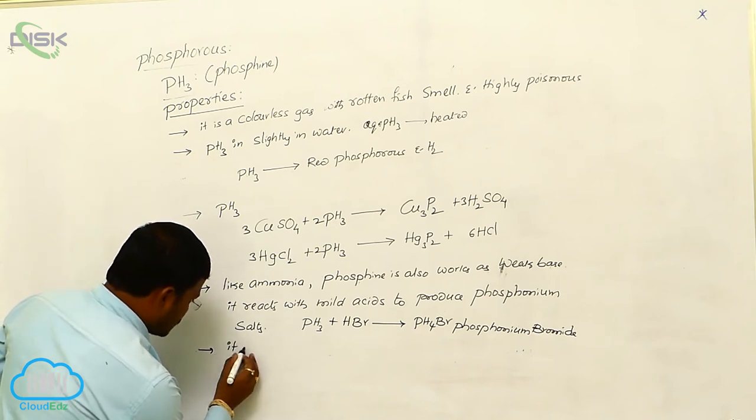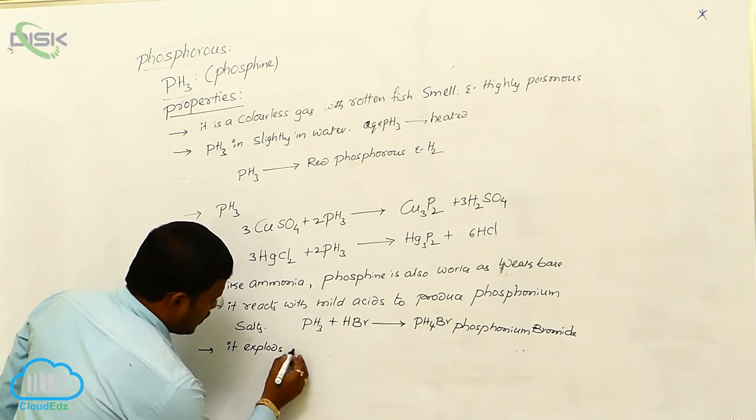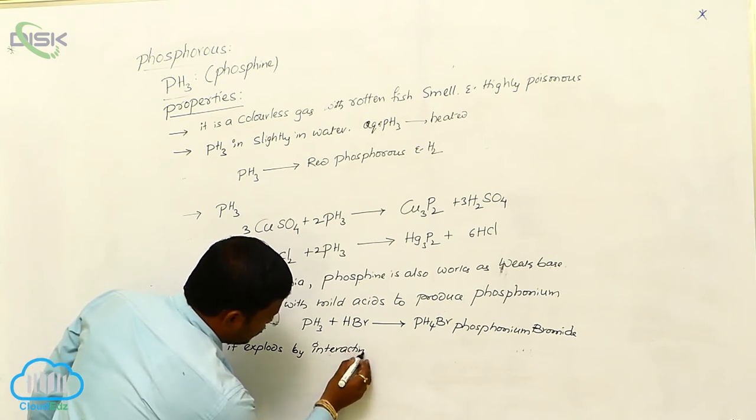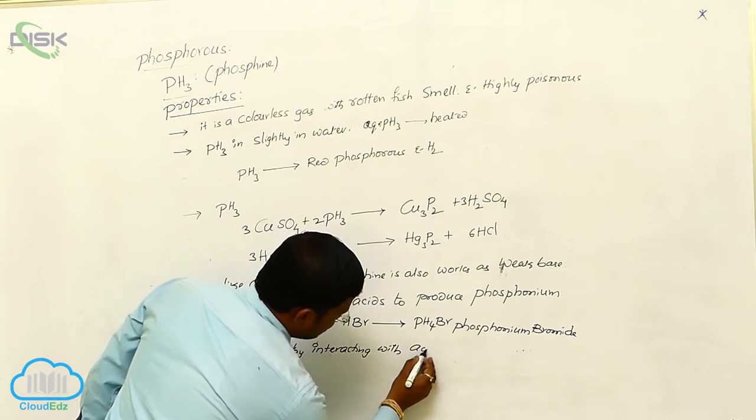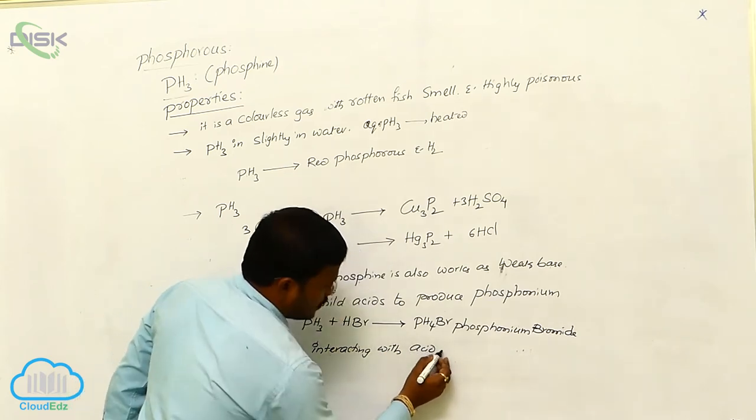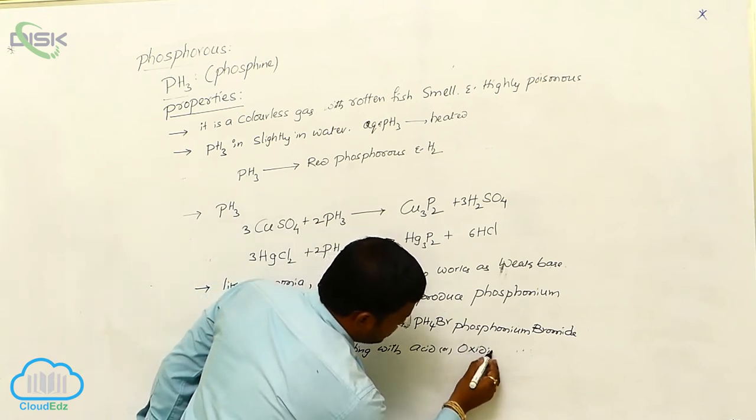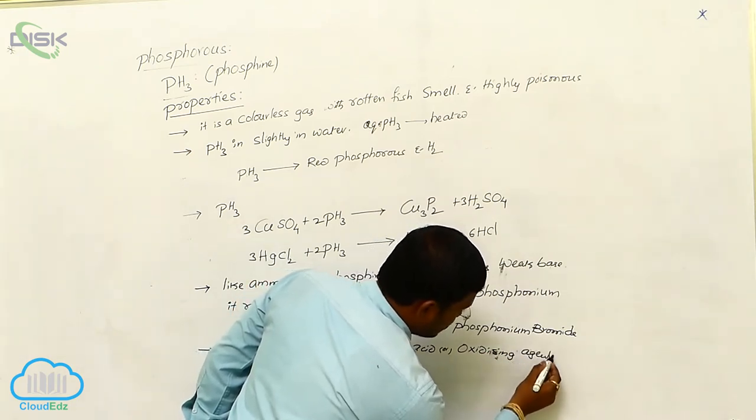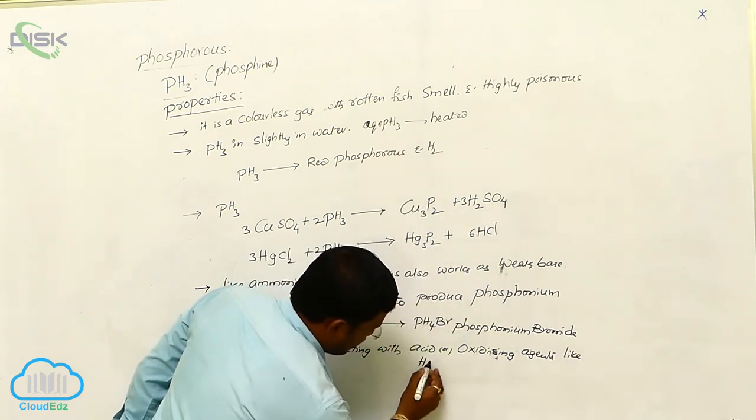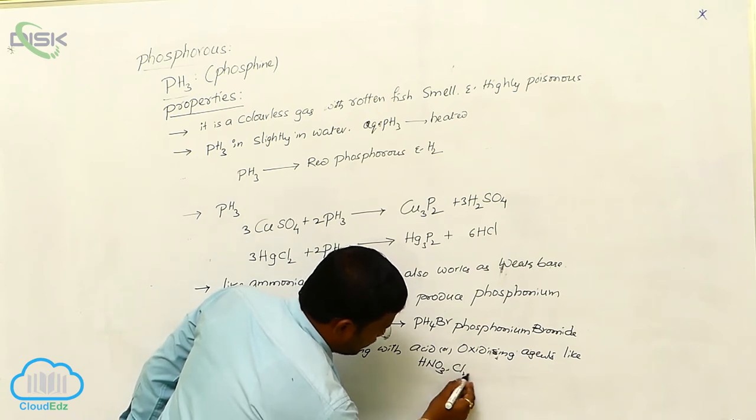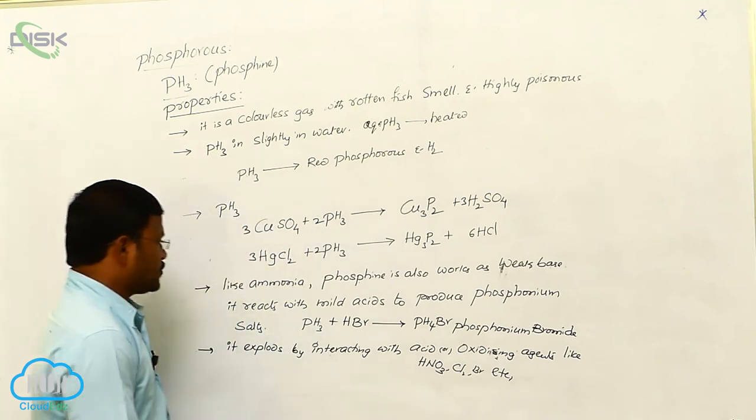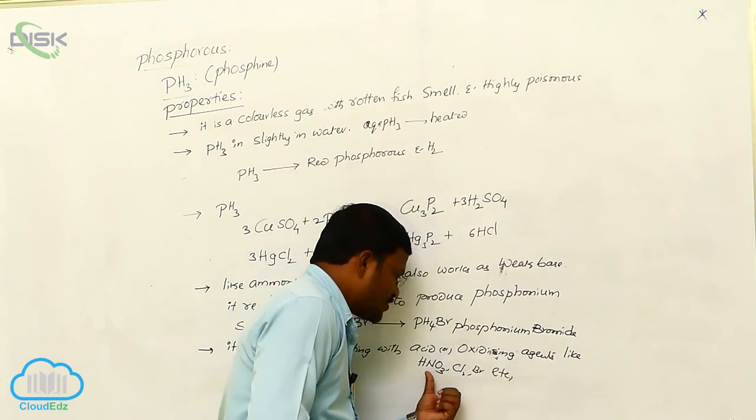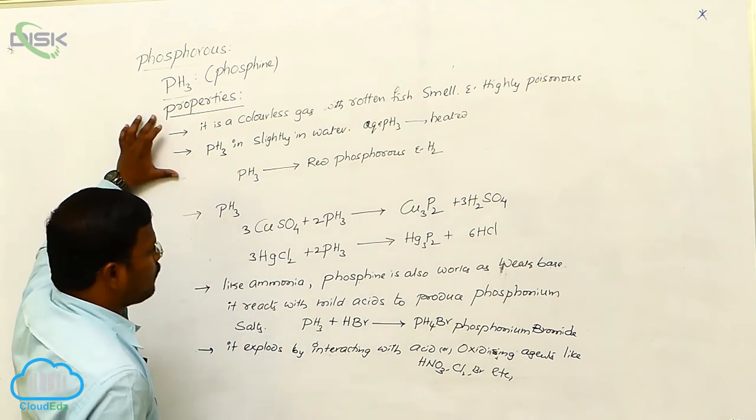So this is the base character shown by phosphine. And also, it explodes by interacting with acids or oxidizing agents like nitric acid, chlorine, bromine, etc. So it explodes by interacting with acids or oxidizing agents like HNO3, chlorine, bromine, etc. This is the properties of phosphine.